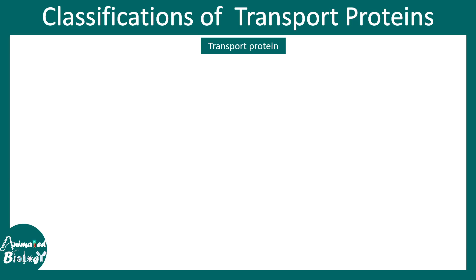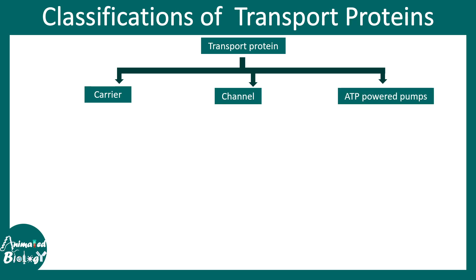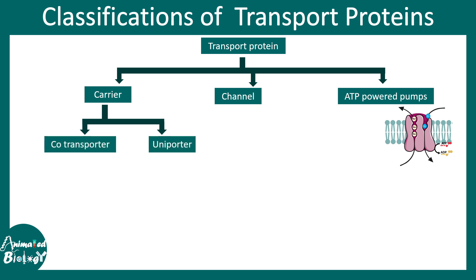In this video we will talk about different types of transport proteins and their classification. Transport proteins can be subdivided into groups like carriers, channels, and ATP-powered pumps. Among carriers you can find co-transporters and uniporters. ATP-powered pumps require ATP hydrolysis for the transport of ions. In the case of co-transporters or uniporters, ATP is not required. In uniporters, there is a uniform direction of movement of one molecule across the membrane via the carrier protein.